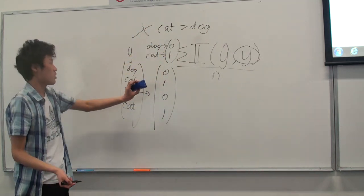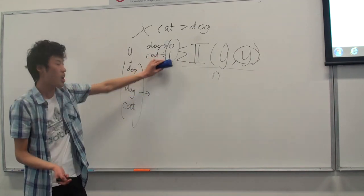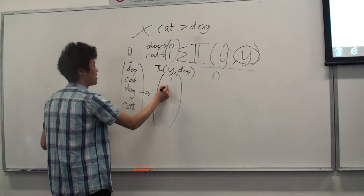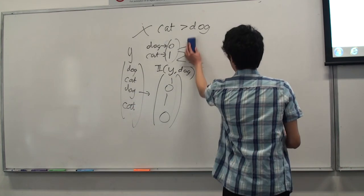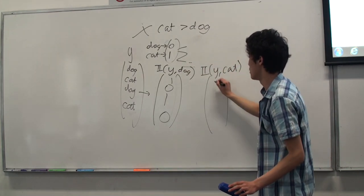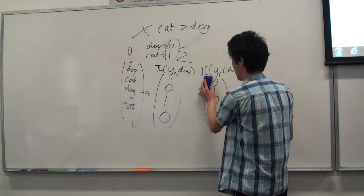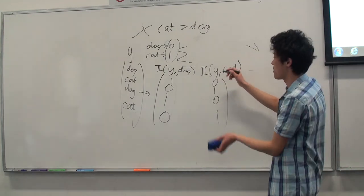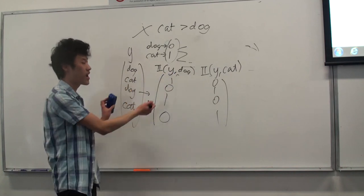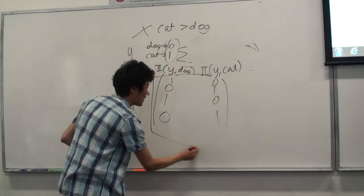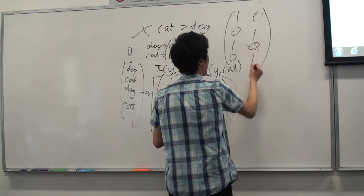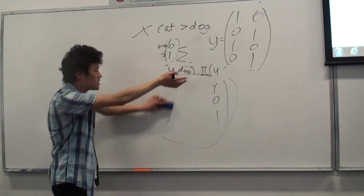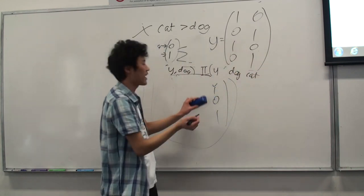We solve this using indicator functions. The first column is the indicator that y equals dog — giving [1, 0, 1, 0]. The second column is the indicator that y equals cat — giving [0, 1, 0, 1]. We combine them together and this is your new y variable with two columns. This process is called dummification — we use indicator functions to create a new y matrix. This is needed to classify between dog and cat for some algorithms.